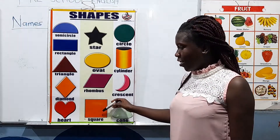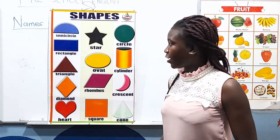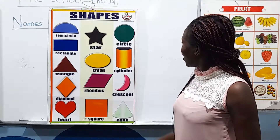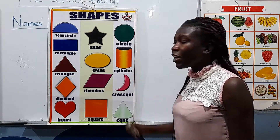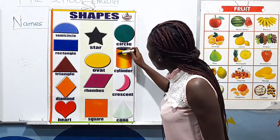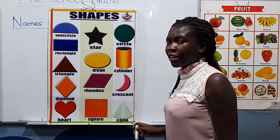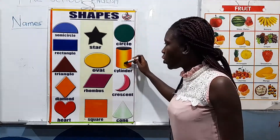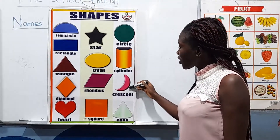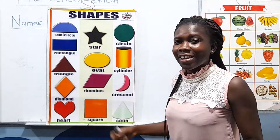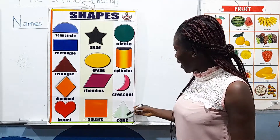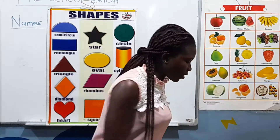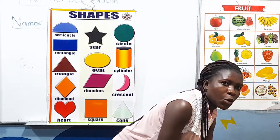The square has an orange color. The circle here has a green color. The cylinder has two colors — orange and yellow. The crescent has a pink color, and our last one, the cone, has a light green color.